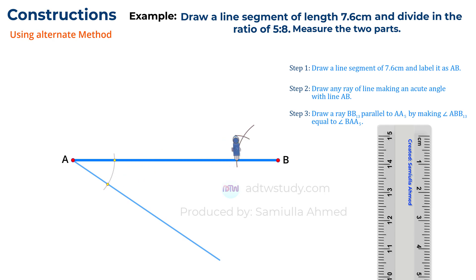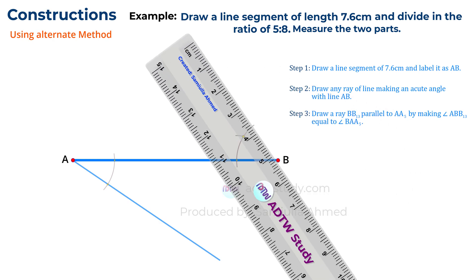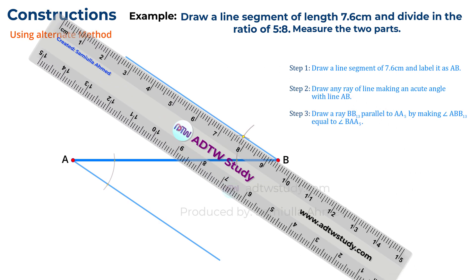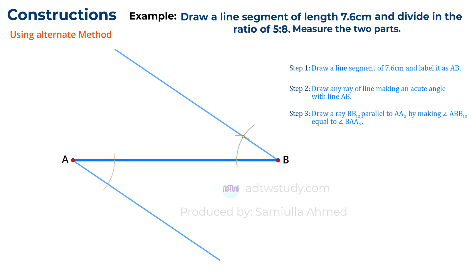Now draw a line from point B through this new point, creating a line that makes the same angle as the incline line at point A. Next, since we need to divide line AB into a 5 to 8 ratio, we will divide the incline line from point A into 5 equal parts and the incline line from point B into 8 equal parts.